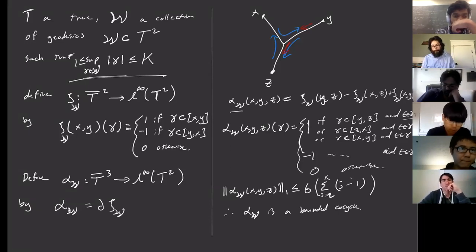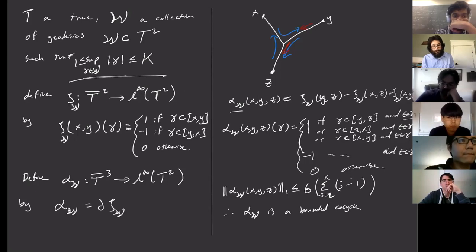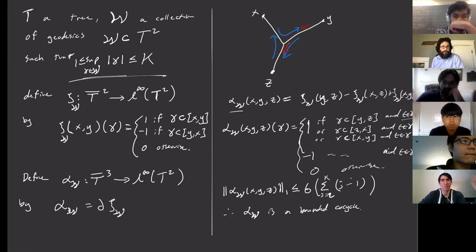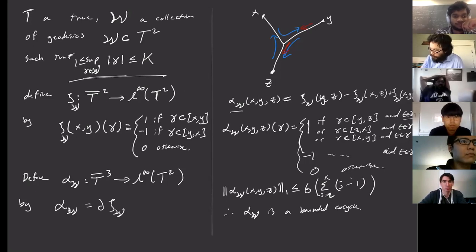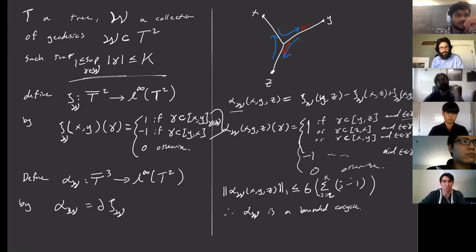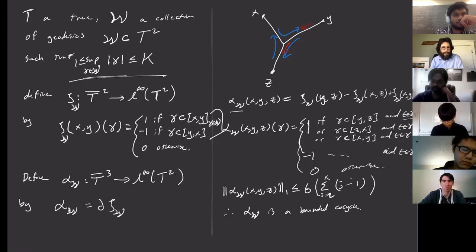Question: why do C and alpha depend on the collection of geodesics W? For each geodesic gamma not in W, we just define it to be zero. So for each collection of geodesics, we set the value to zero outside W. If you like, you can take the collection of all geodesics and then project down to the ones in W.